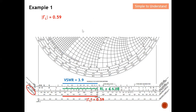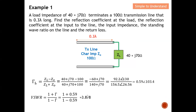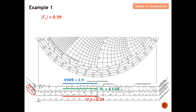The Smith chart VSWR reads 3.9, while the calculated value was 3.878 — quite a fair and accurate result. We have successfully calculated both the reflection coefficient at the load and the VSWR, by calculation and by Smith chart, and the values are quite accurate. The return loss from the Smith chart is 4.6 dB.